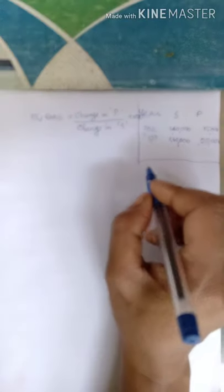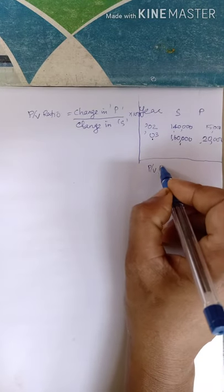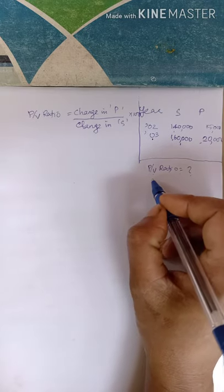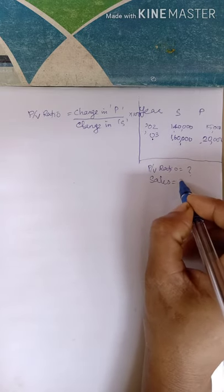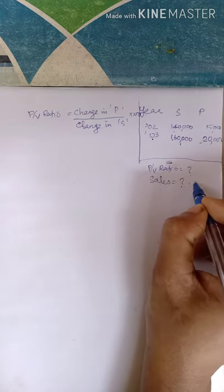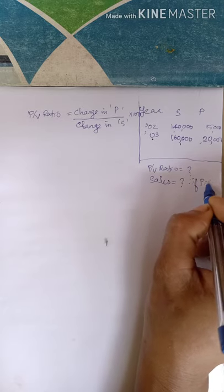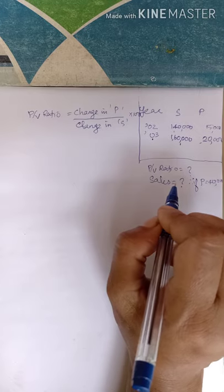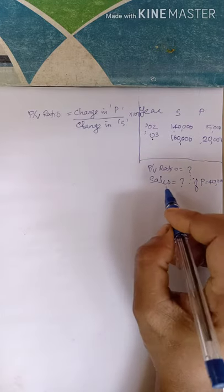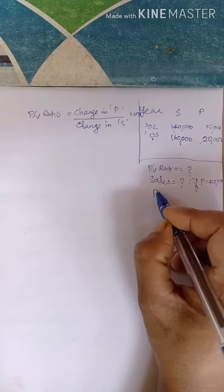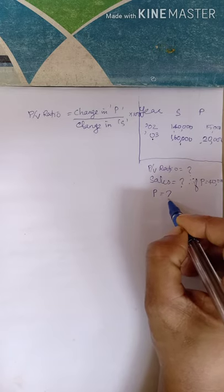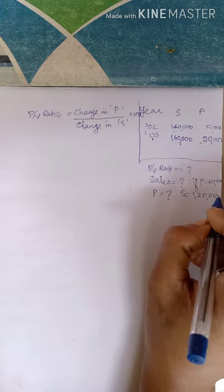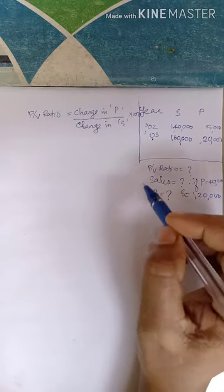Here you are asked to calculate PV ratio, sales required to earn a profit of Rs. 40,000, and calculate profit when sales are Rs. 1,20,000.